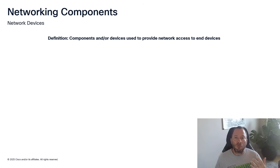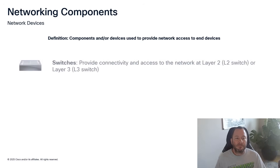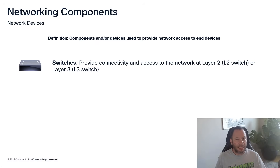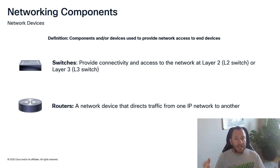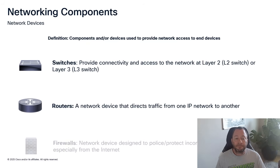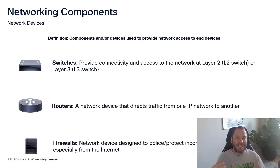Now we move into actual intermediary network components. A switch is typically the first device you connect to on a network — it provides access and works at layer two and layer three, giving you local access. A router takes traffic from one IP network and allows it to go to a different IP network, and is typically used for networking across the internet. A firewall is designed to keep trespassers and unwanted data out.